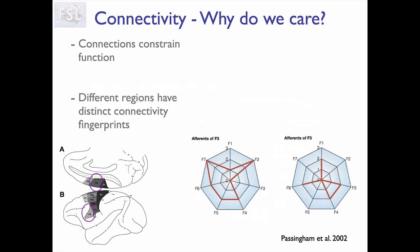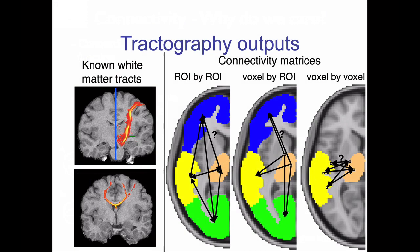In addition to segmenting the white matter, we can also use tractography to segment the gray matter. The basic idea is that we can use tractography to estimate for each gray matter region what other gray matter regions it is connected to. This is often referred to as its connectivity profile or connectivity fingerprint. Because this connectivity fingerprint is different for different gray matter regions, we can use it to distinguish different parts of the cortex, the thalamus, or different gray matter nuclei. So basically, tractography lets us reconstruct white matter tracts to segment the white matter and estimate connectivity between different gray matter regions.